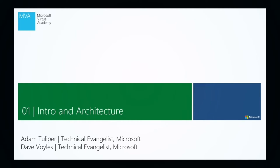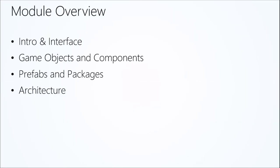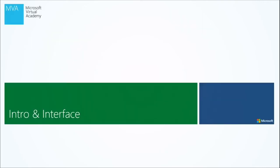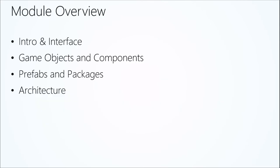This session covers intro and architecture of Unity — basic intro and the interface, game objects and components, prefabs and packages, and architecture. Architecture is a very important subject coming from a software development background. It's important to understand how Unity works, its various components, and how they fit together — including the coding model. Coming from enterprise software, going to game development, I had no idea where to start: the draw loop, the update loop, Unity's component system, the game loop — we'll be covering all of that.